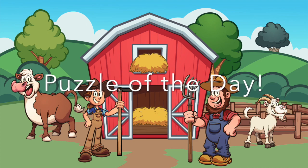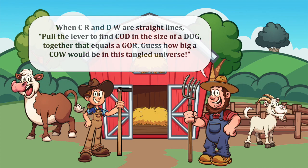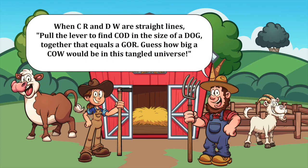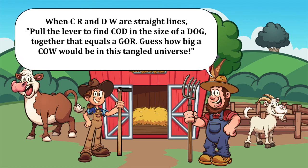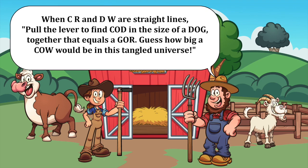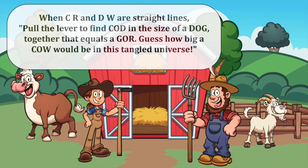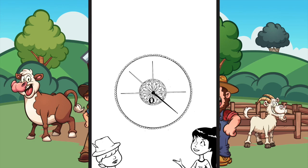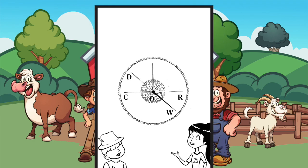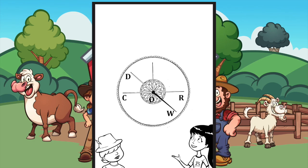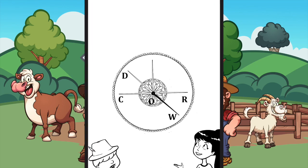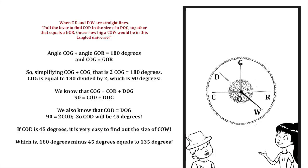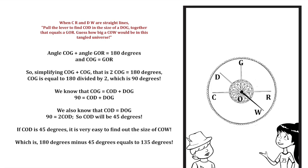Coming to the puzzle of the day. When C-R and D-W are straight lines, find angle C-O-D in the size of a dog, and together that equals a gore. Guess how big a cow would be in this tangled universe. We can understand that O is the center and C-R and D-W are straight lines. So we can draw this based on the rules mentioned in the puzzle. If we can find the angle C-O-D, then we can just subtract it from 180 degrees to find out C-O-W.